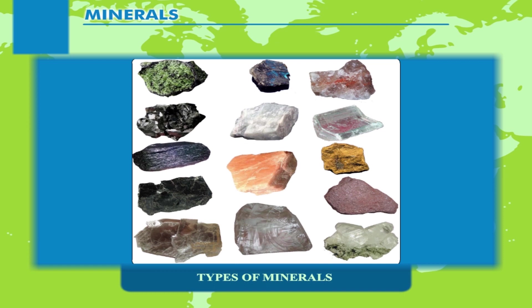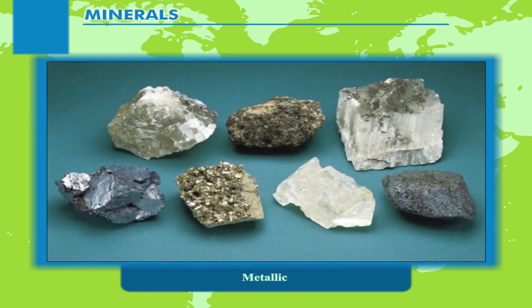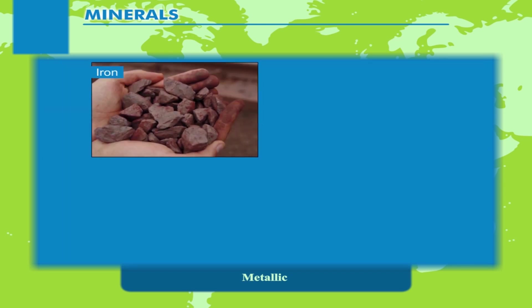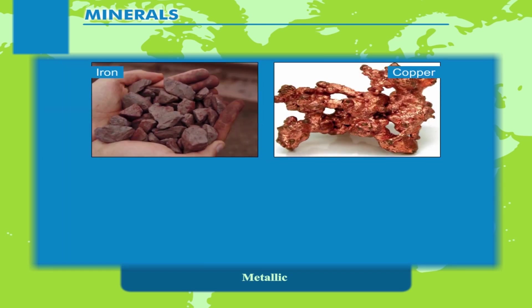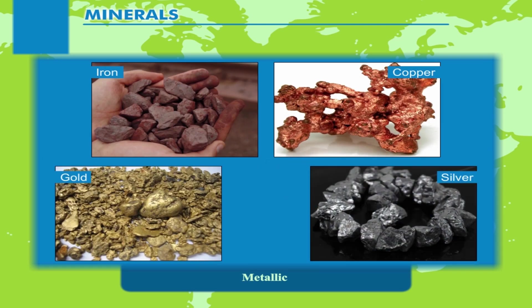Types of Minerals. Metallic minerals contain metal in raw form. Examples include Iron, Copper, Gold, Silver, etc.